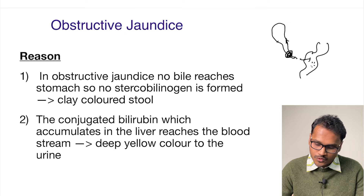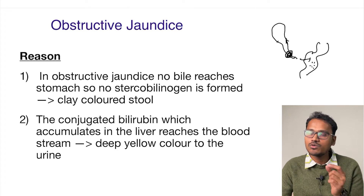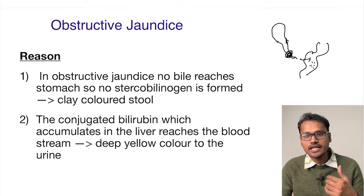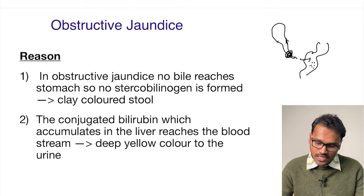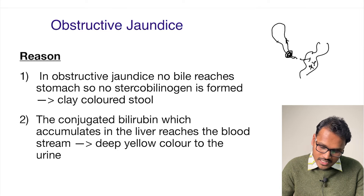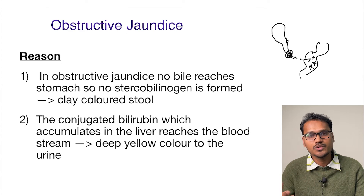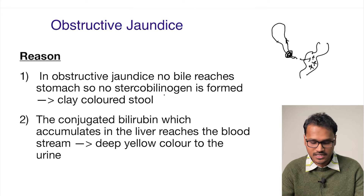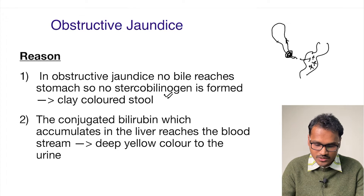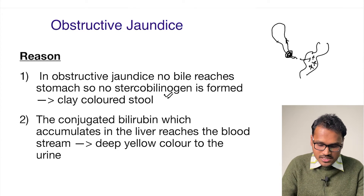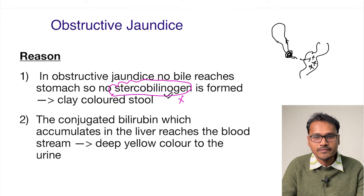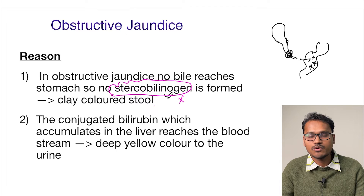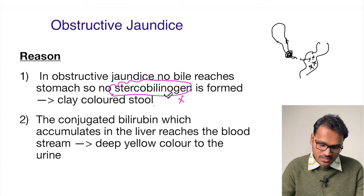There will not be formation of two products: stercobilinogen and urobilinogen. This is because the intestinal bacteria are the ones which produce these bilinogen components — stercobilinogen as well as urobilinogen. Now there is no stercobilinogen; it is going to be absent. Stercobilinogen is the one which gives color to the stool, so because of its absence, the stool will be clay colored.